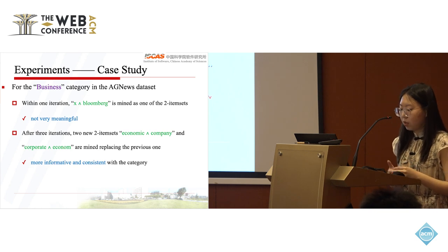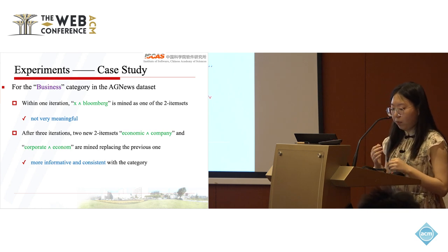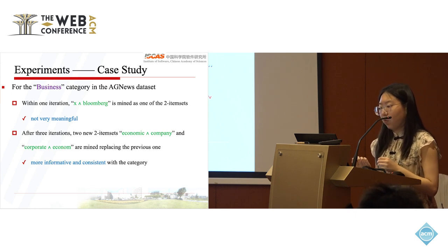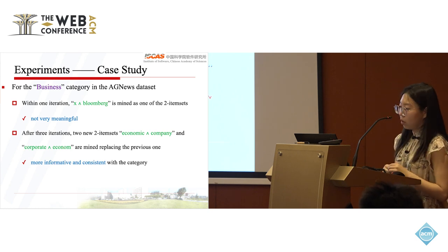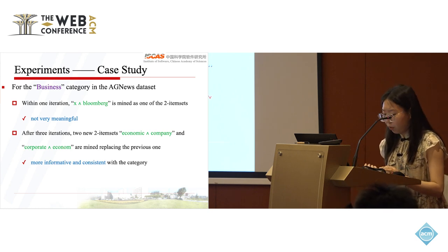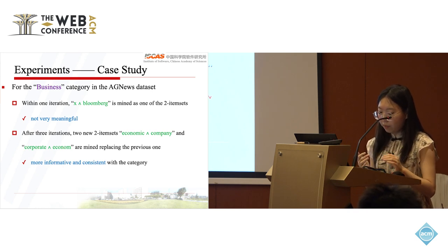During several iterations, the rule and the prediction will optimize in the manner of mutual enhancement. For example, within one iteration, stocks and Bloomberg is mined, which is not very meaningful. But after three iterations, economic and company are mined, replacing the previous one.